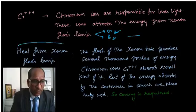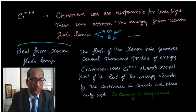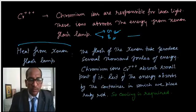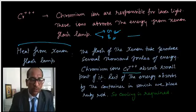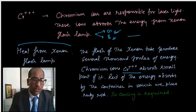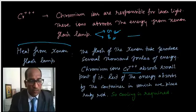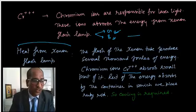Heat from xenon flash lamp: The xenon flash lamp generates heat of several thousand joules. Chromium ions absorb only a small amount of energy, so the rest of the energy is absorbed by the ruby crystal container, which requires cooling.